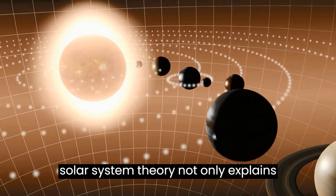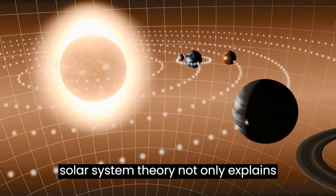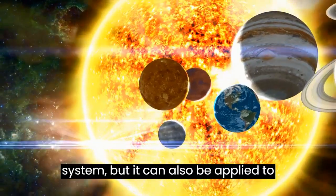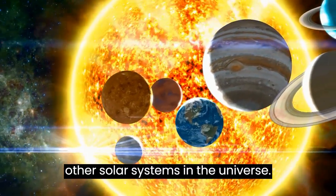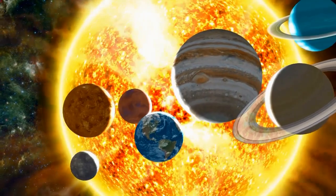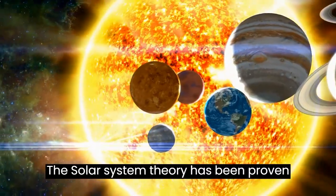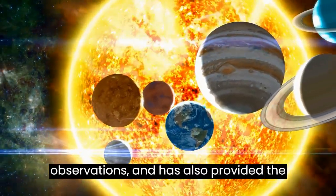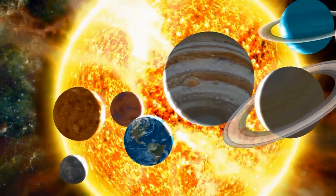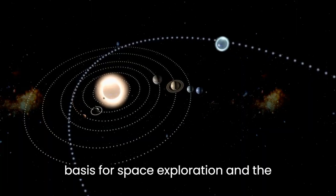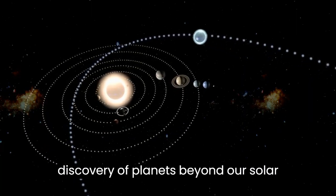However, the solar system theory not only explains the motion of planets in our solar system, but it can also be applied to other solar systems in the universe. The solar system theory has been proven through many observations and has also provided the basis for space exploration and the discovery of planets beyond our solar system.